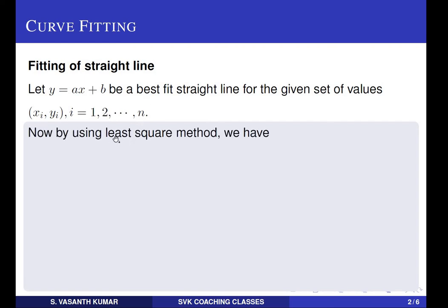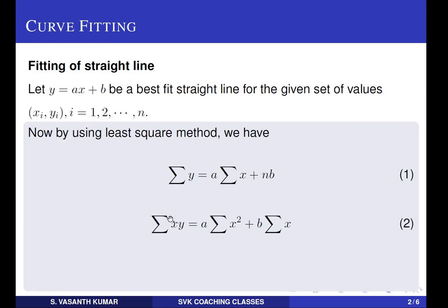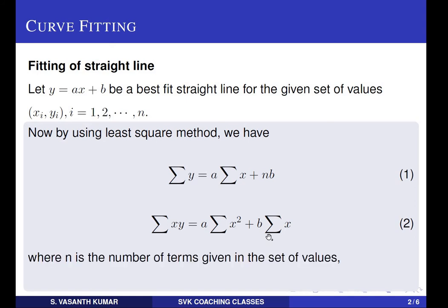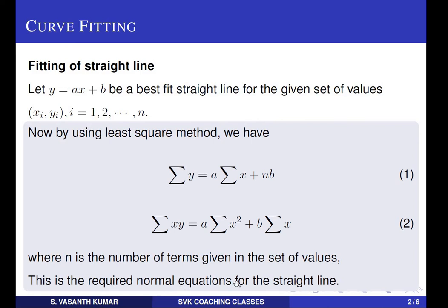By using the least square method, the normal equation for the equation of the form y = ax + b is given by: Equation 1: summation y = a·summation x + nb. Equation 2: summation xy = a·summation x² + b·summation x. This is the normal equation for a straight line of the form y = ax + b, where n is the number of set of values given by the data.